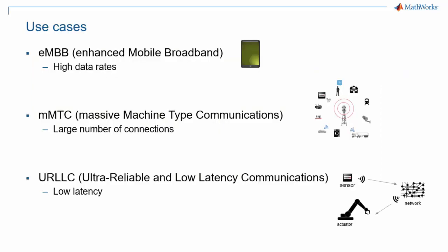Let's talk about use cases first. 5G NR is not just a faster version of LTE. The use case for higher data rates is called Enhanced Mobile Broadband, or eMBB. Several other use cases have been defined, including Massive Machine Type Communications, or mMTC, where a larger number of devices are connected to one base station.